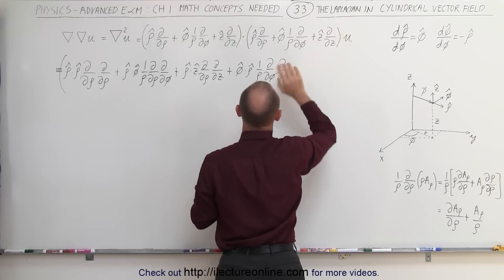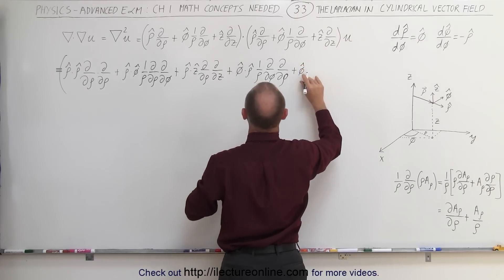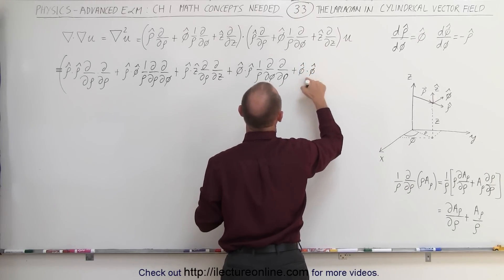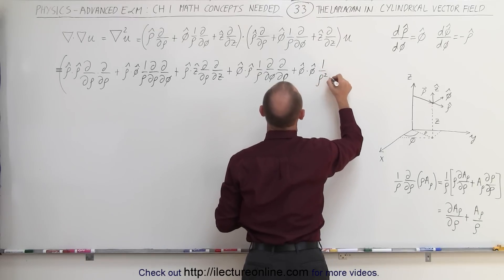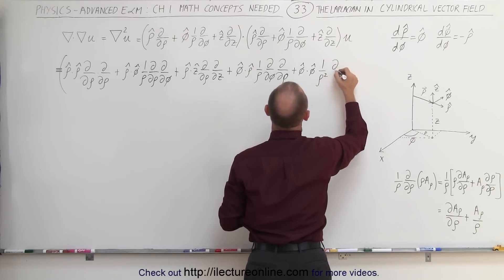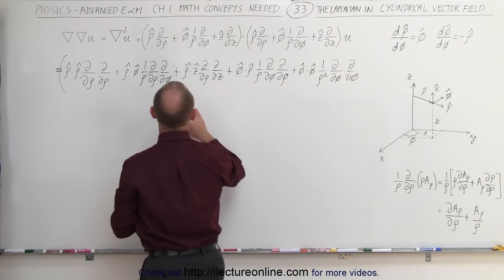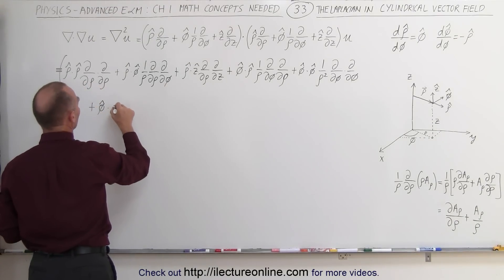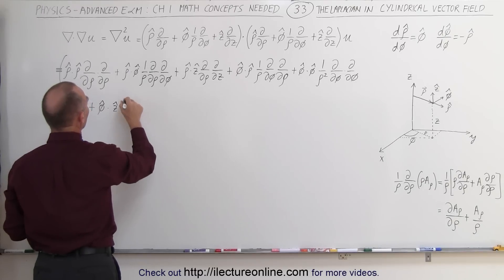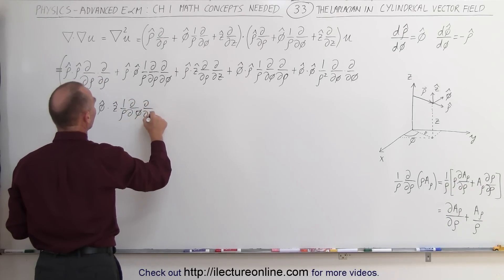This term, however, will not go to zero: we have the φ unit vector dotted with the φ unit vector, which equals one. One over ρ times one over ρ gives one over ρ squared, times the partial with respect to φ, times the partial with respect to φ. Then plus the φ unit vector dotted with the z unit vector — that goes to zero — times one over ρ, times the partial with respect to φ, times the partial with respect to z.